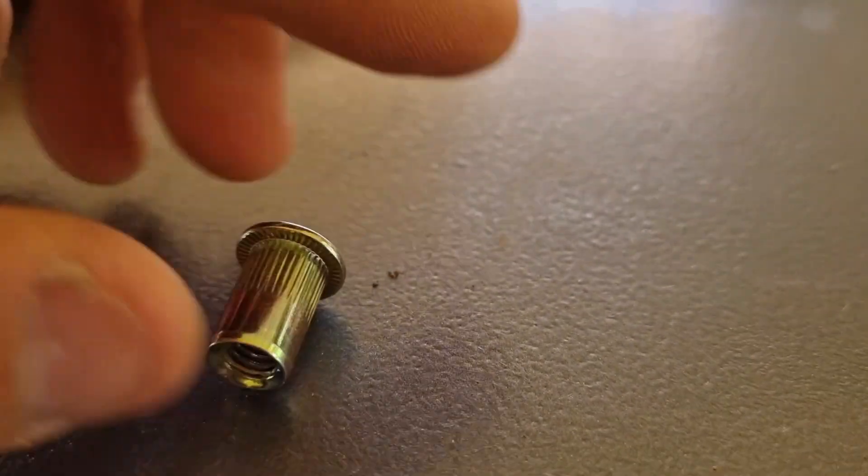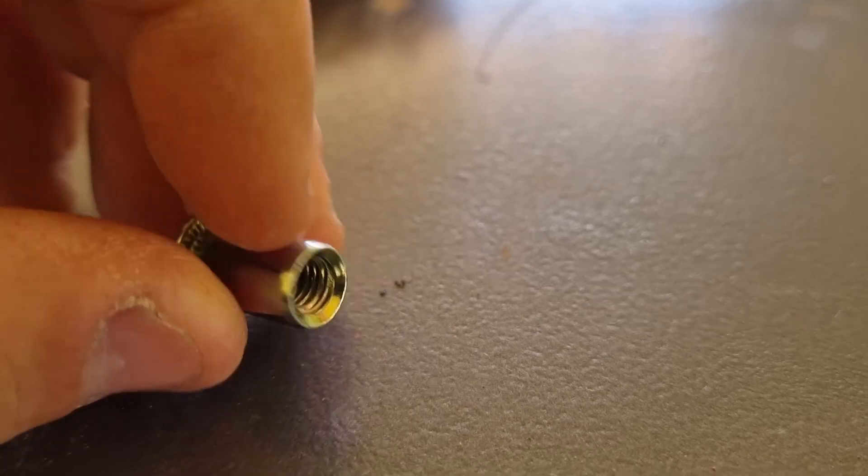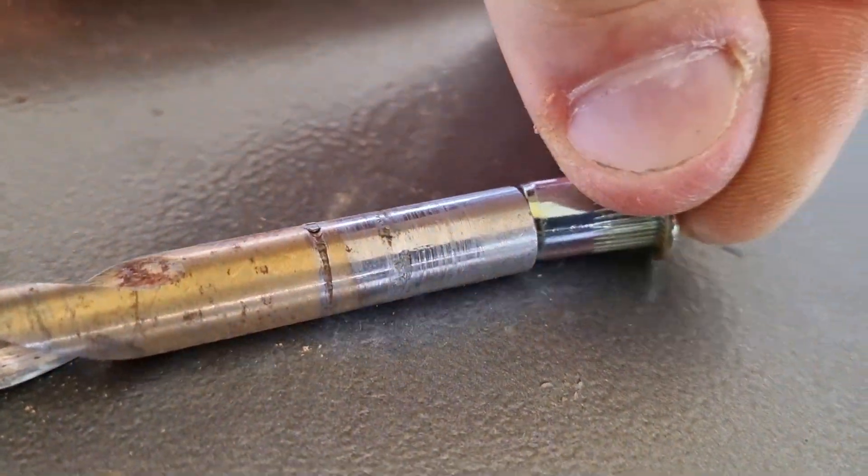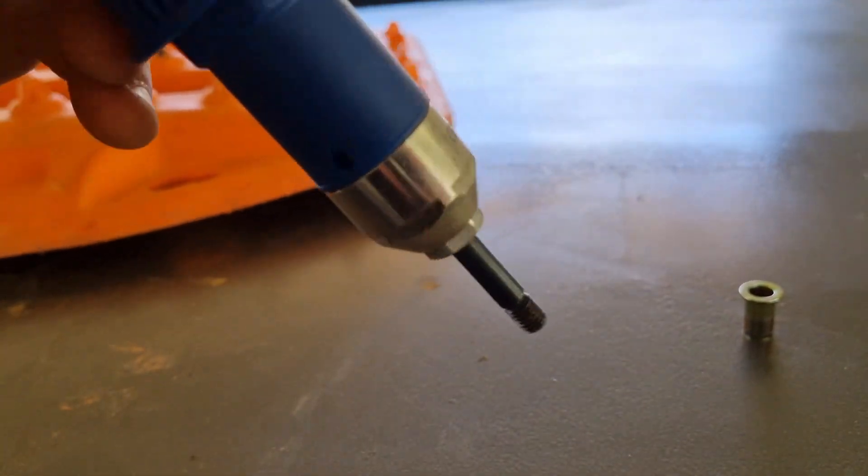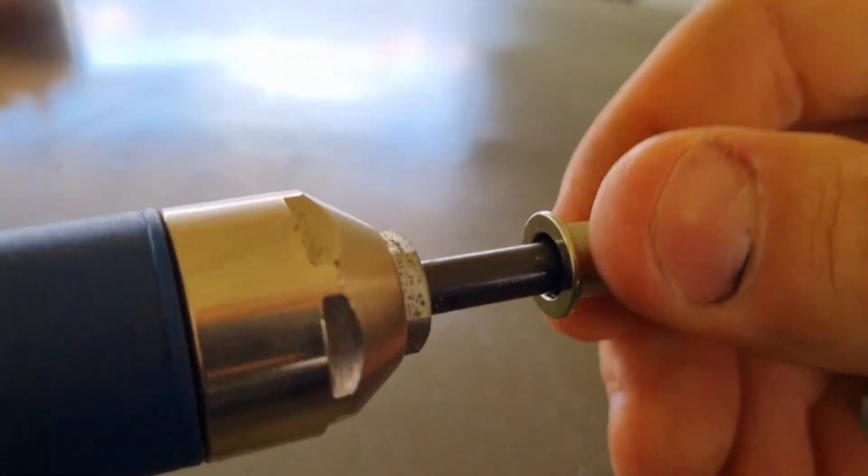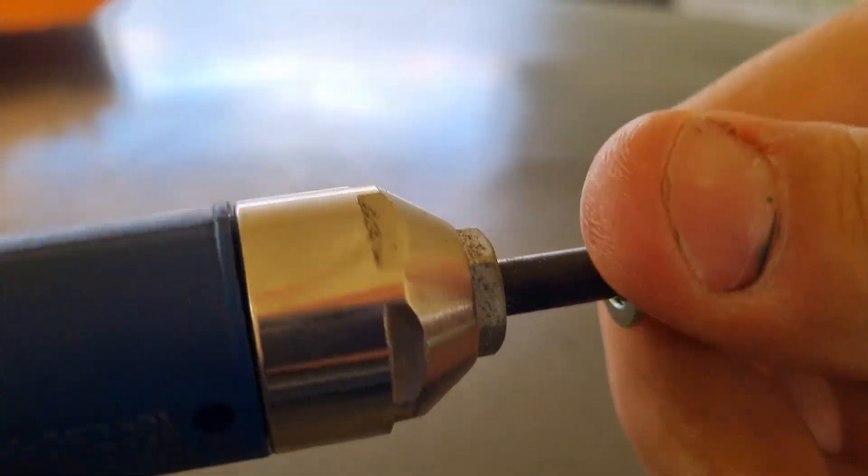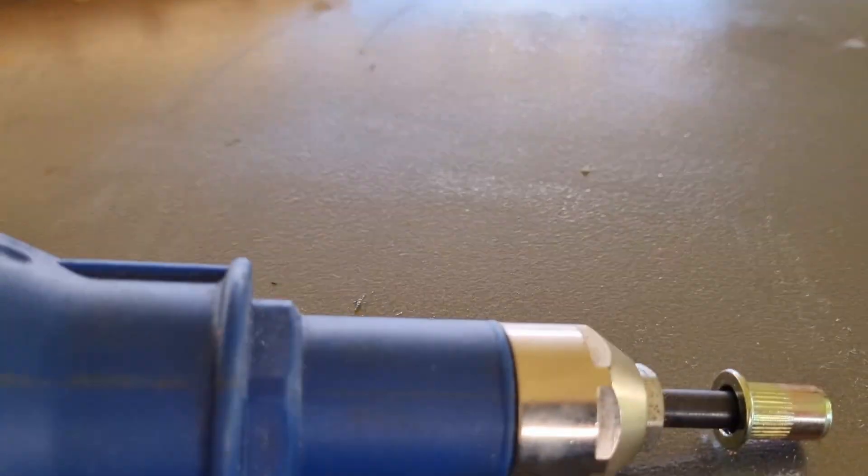Some of you may have seen these before, this is what is called a rivnut. All you do to use it is you get a drill bit the same diameter as your rivnut, drill your hole for your rivnut and then you get a rivnut tool. Mine is a drill attachment type. You thread the rivnut onto the rivnut tool and then you install it into your hole. Let's do it.